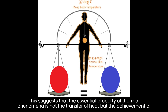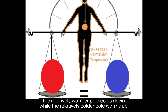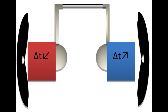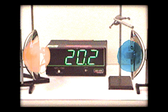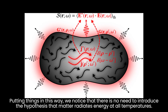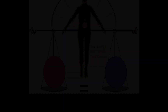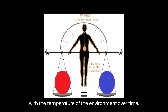This suggests that the essential property of thermal phenomena is not the transfer of heat, but the achievement of temperature equilibrium over time. The relatively warmer pole cools down, while the relatively colder pole warms up. In the Rumford experiment, we observe the temperature drop on the warmer pole. On the cooler pole, ice melts as it heats up. The phenomenon of thermal equilibrium is inseparable from the phenomenon of warm and cold sources. In the process of reaching thermal balance, both the warm and cold poles always participate. We notice that there is no need to introduce the hypothesis that matter radiates energy at all temperatures.